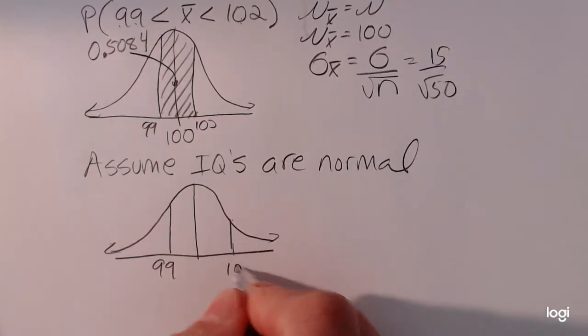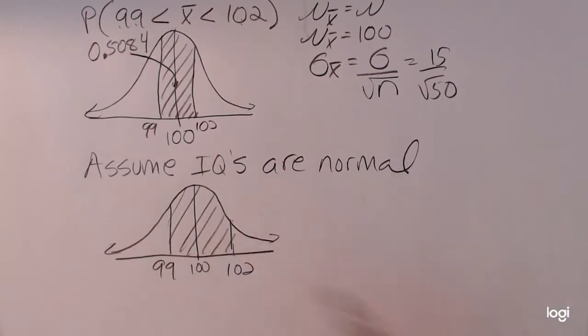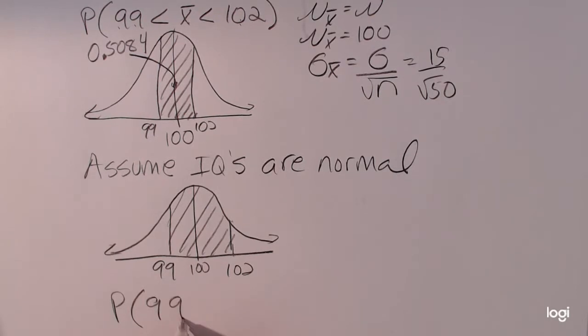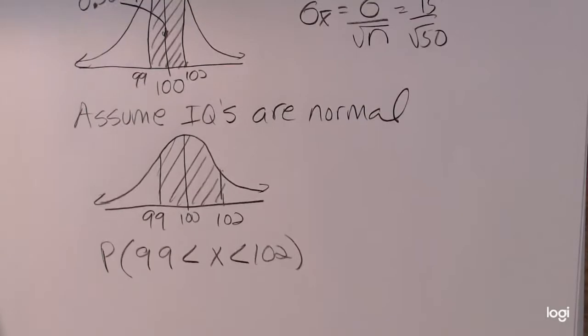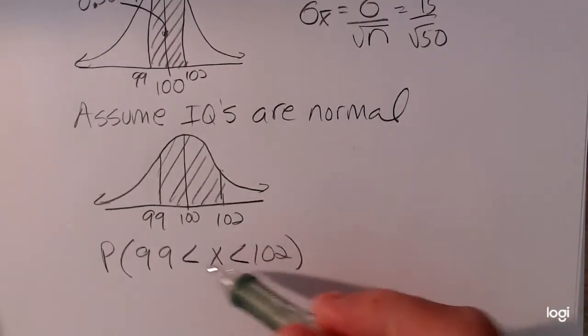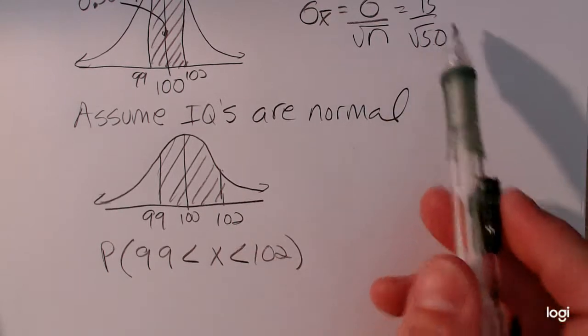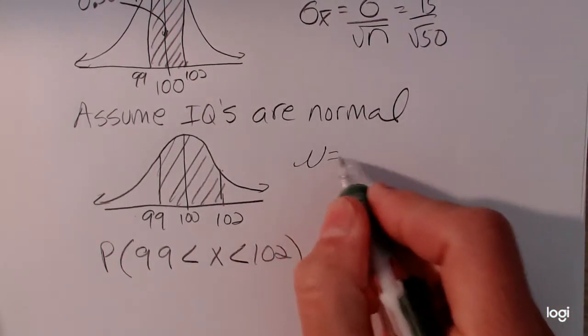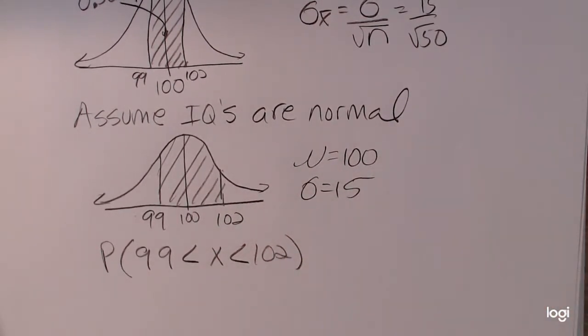But this time, I'm finding the probability corresponding to an individual X value. So I don't want to use X bar for my notation. I want to use X. Now, I'm looking at the distribution for X. I don't want to use the standard error of the mean for that standard deviation. I want to use 100 and I want to use 15 for mu and sigma, respectively.